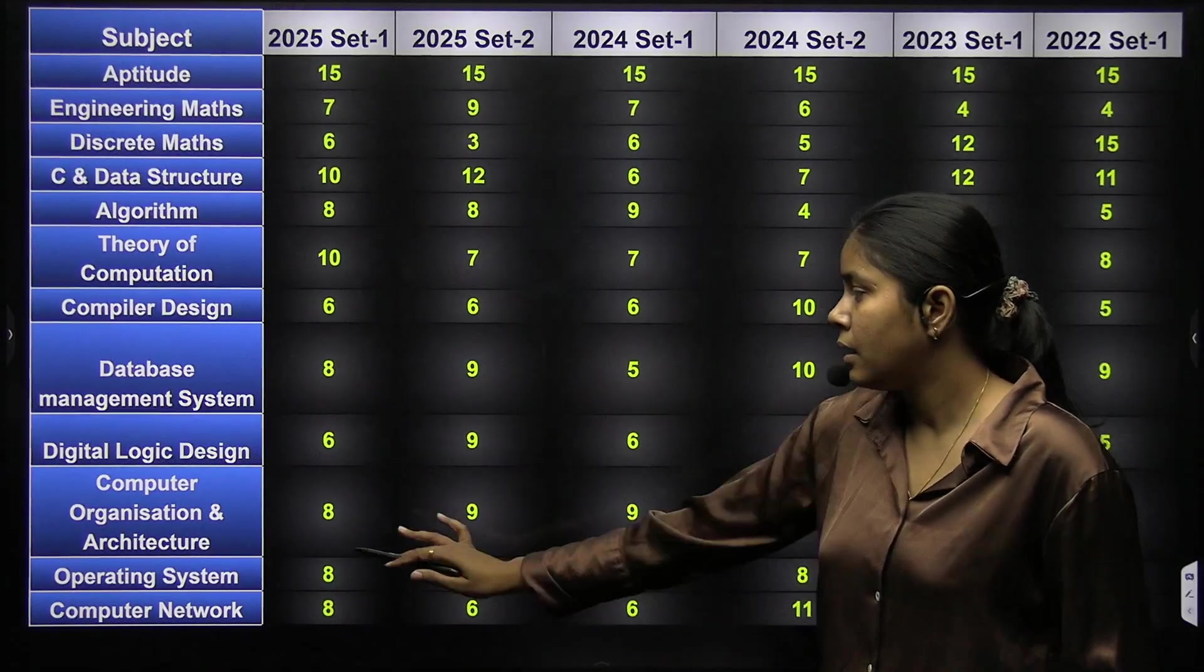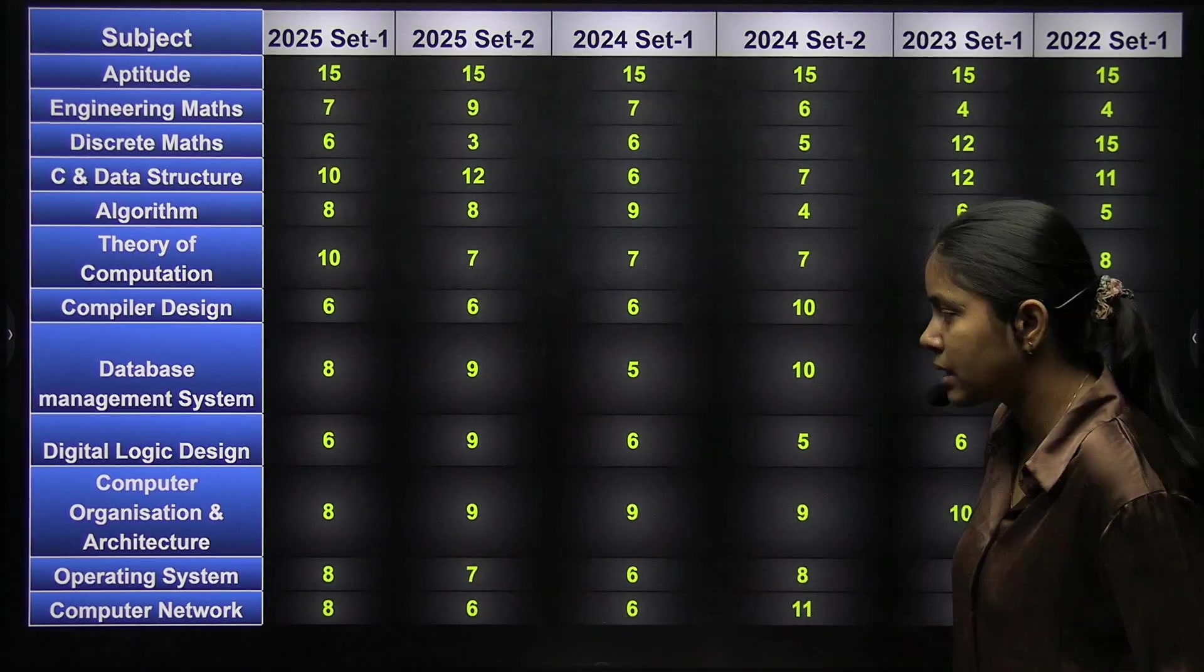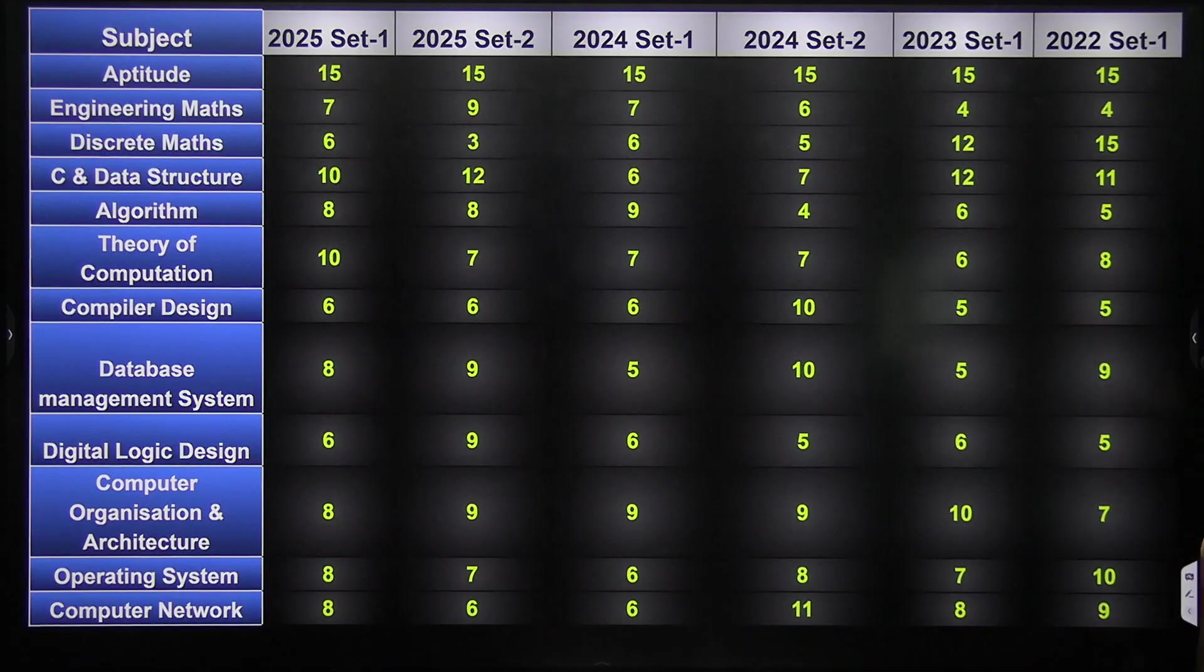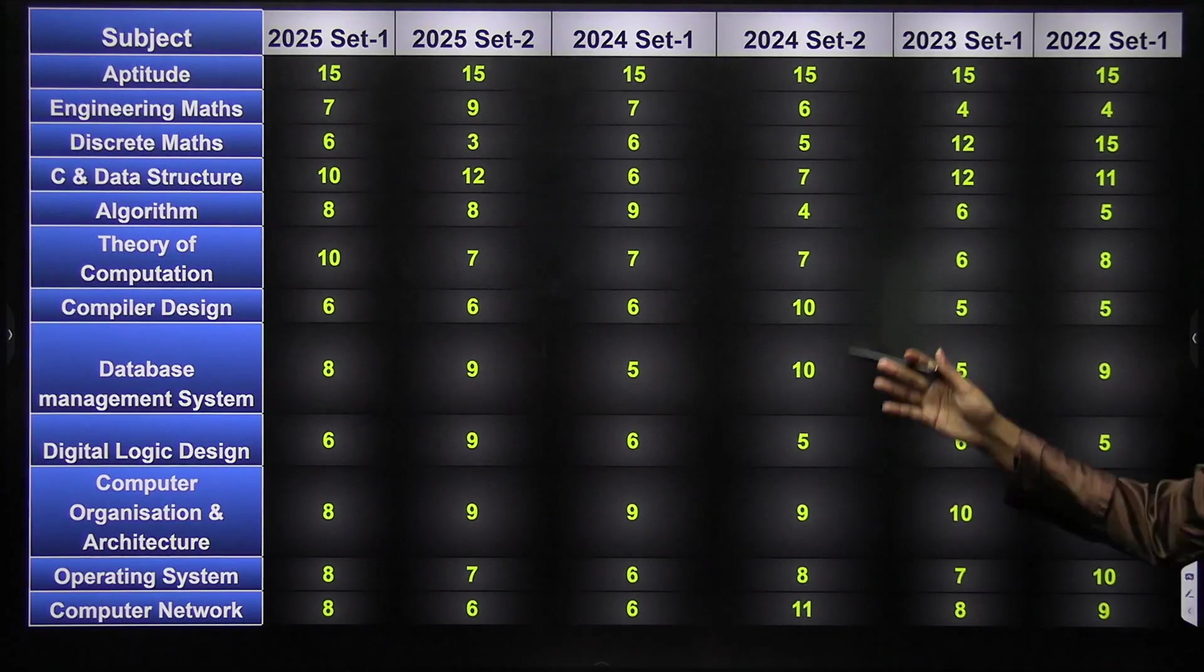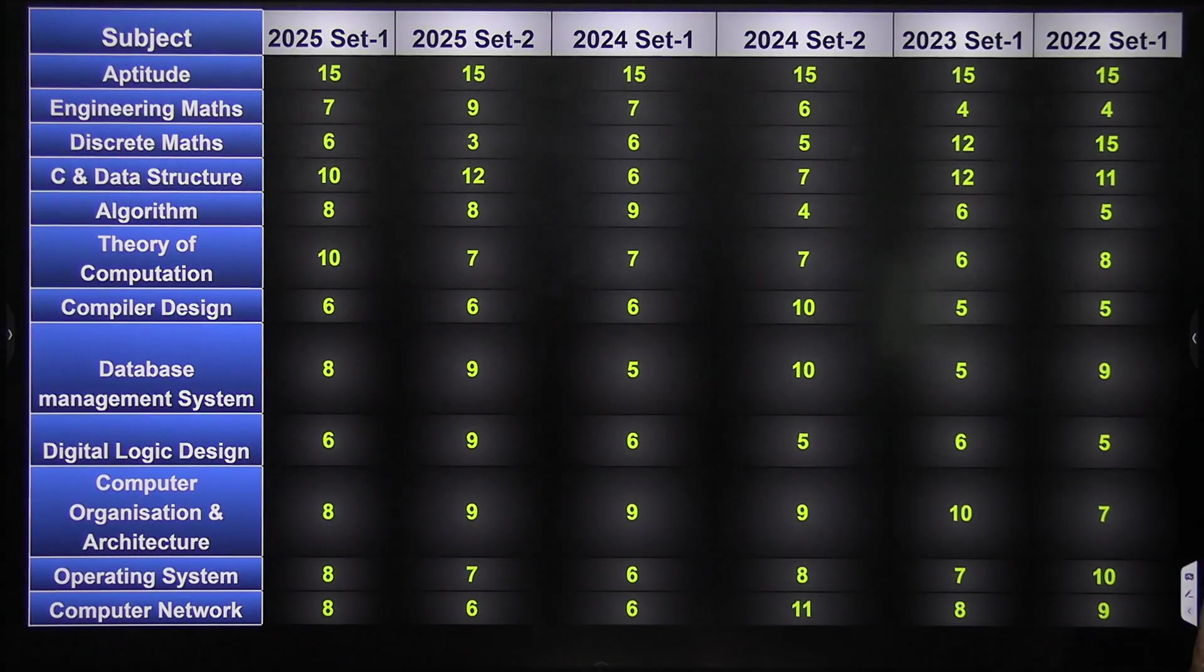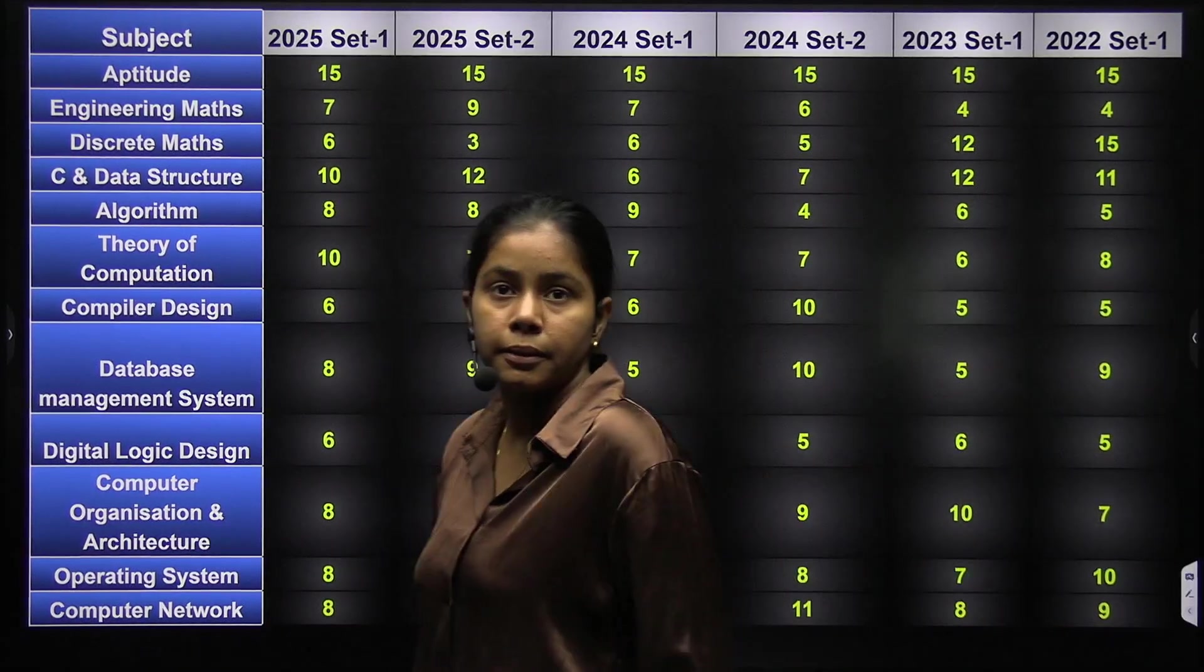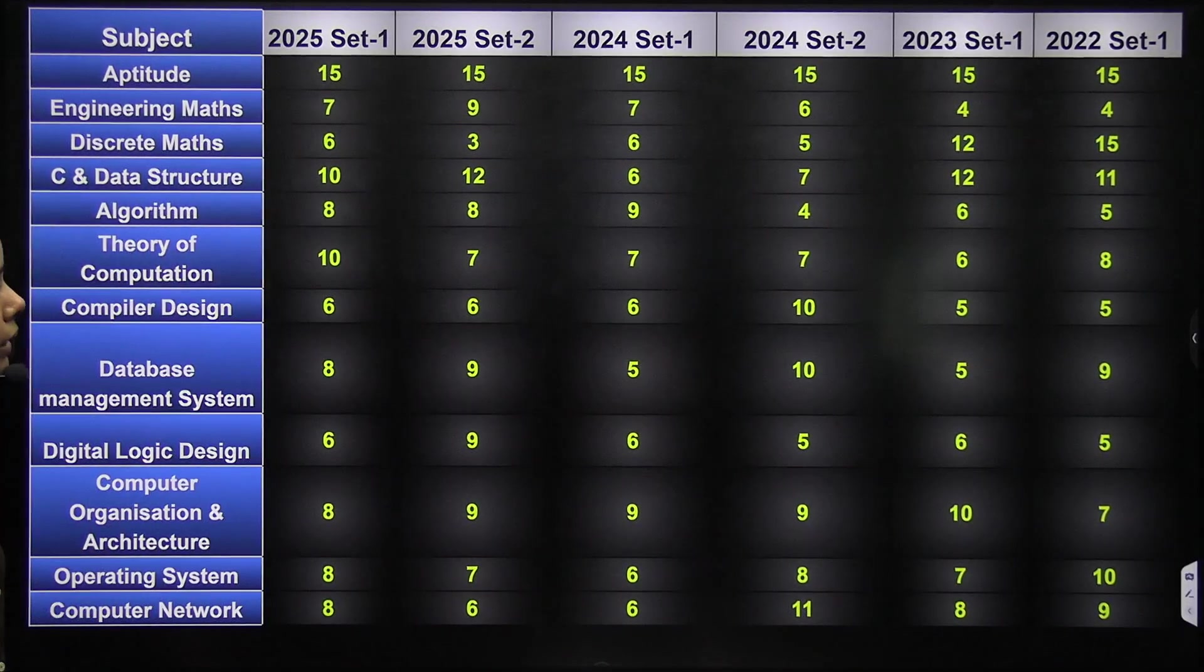Database DBMS 8 and 9, digital logic 6 and 9, COA 8 and 9, operating system 8 and 7, and computer network is 8 and 6. So this is our overall weightage in 2025 and you can check all other years as well.